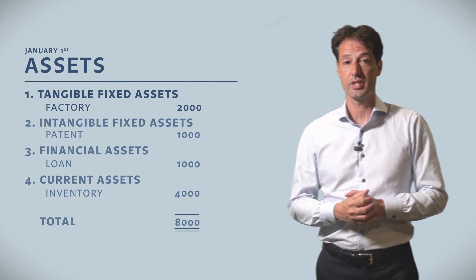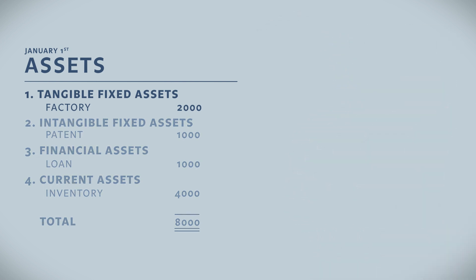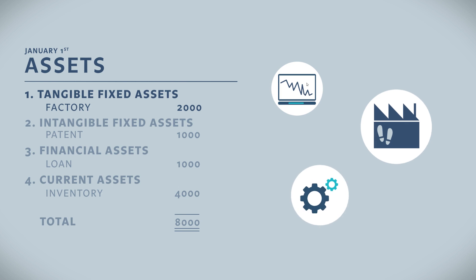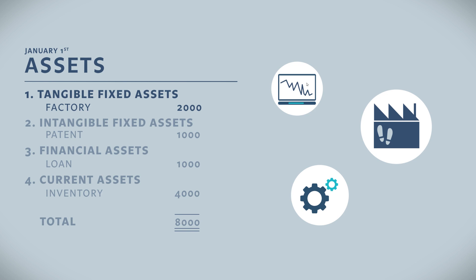Back to tangible assets. Those are physical assets that are used to operate the business for a longer period. In our company, the only tangible asset that we have is a factory that we bought for 2000.